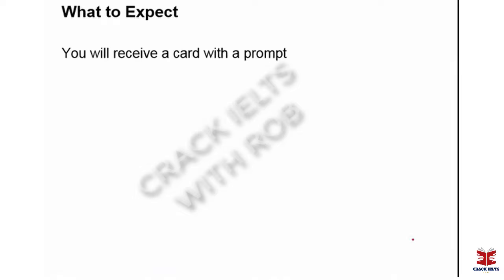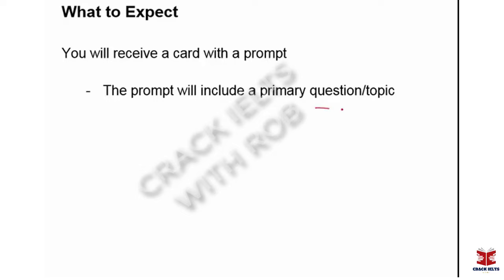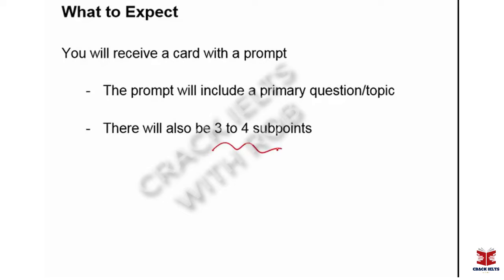First of all, what to expect. For Part Two, you are going to receive a card with a prompt on it. Your prompt is basically the main question or topic that you need to discuss for your speech. Below your main question or topic on the card will be three or four sub-points — smaller pieces of information that you need to provide in your response. We'll see what those look like when we look at the topic card.